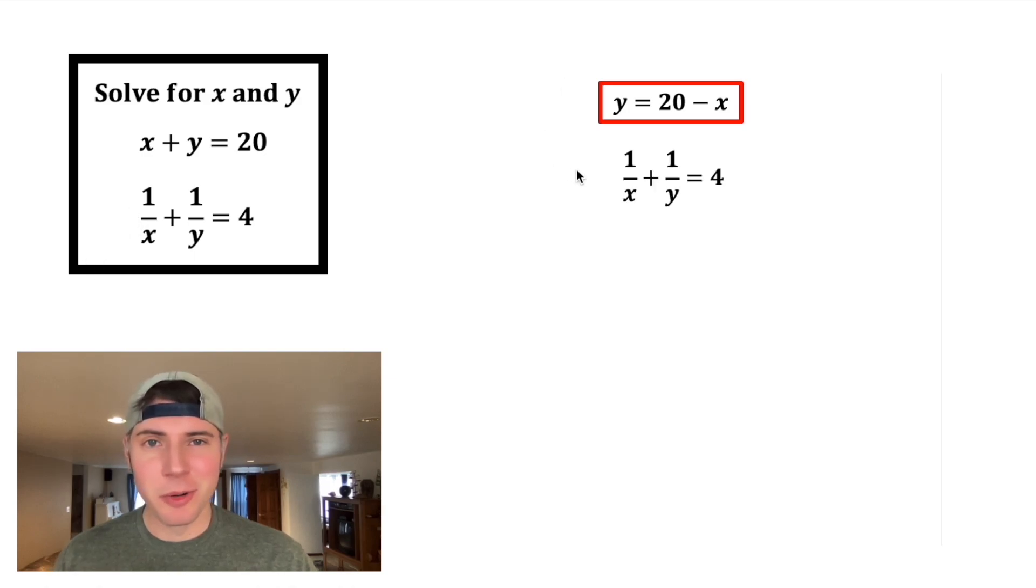Next, let's bring down the other equation. I don't like dealing with fractions, so I'm gonna multiply both sides of the equation by the least common denominator of x, y. On the right-hand side, this just becomes 4xy.